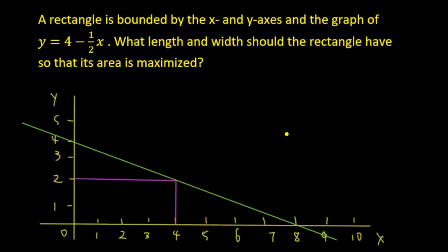Let's do an optimization problem here. A rectangle is bounded by the x and y axis and the graph of y equals 4 minus 1.5x. What length and width should the rectangle have so that its area is maximized?